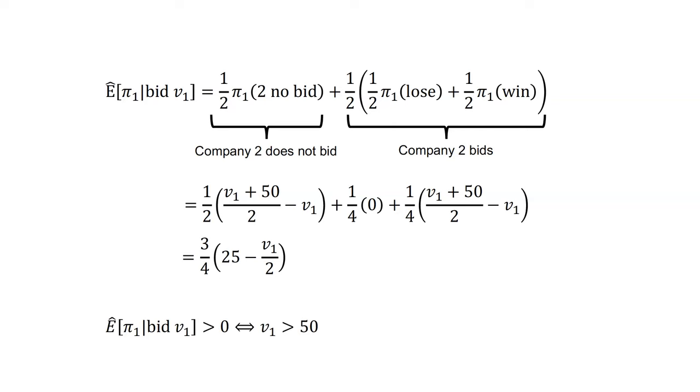We can see the expected profit if they bid V1, or at least their belief, is the profit is greater than zero if V1 is greater than 50, if their private valuation is greater than 50.